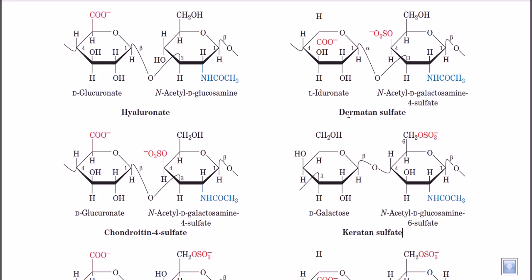In the case of dermatan sulfate, it is a 4-sulfate, meaning the substitution is at the fourth carbon position. In all these cases, the sulfate moiety replaces the hydroxyl group at that carbon. So the sulfate moiety is present at the fourth position in chondroitin-4-sulfate and dermatan sulfate, but in keratan sulfate we have the sixth sulfate, or N-acetyl glucosamine-6-sulfate.